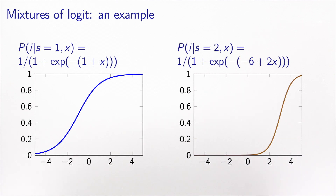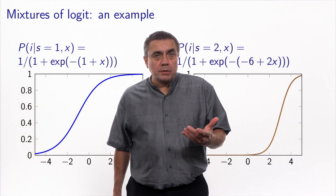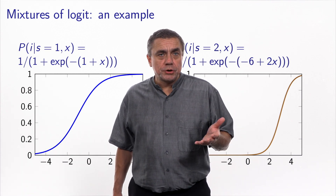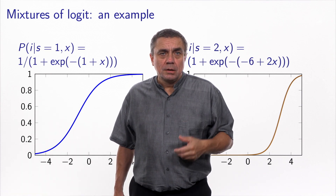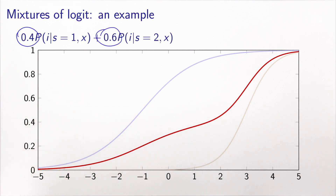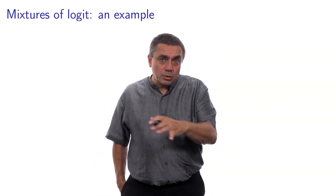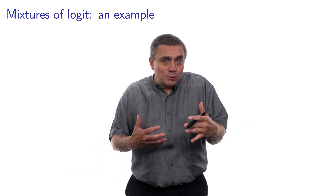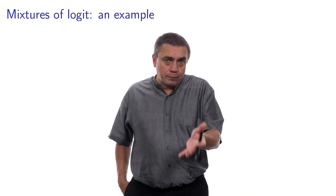Let's take an example of a discrete mixture. I consider two logit models, one on the left and one on the right. You can think of them as the logit model for two different classes of individuals in the population, where the variable s characterizes the group. Now we calculate the convex combination: 40% of the first model and 60% of the second. You can see that the shape of the distribution obtained is completely different from a single logit model, and way more flexible. The logit in each case is a sigmoid, but when you combine two sigmoids you obtain a quite flexible form for the distribution.